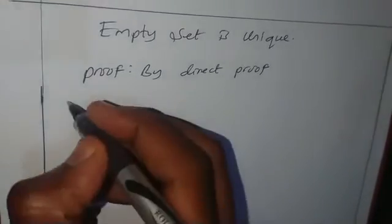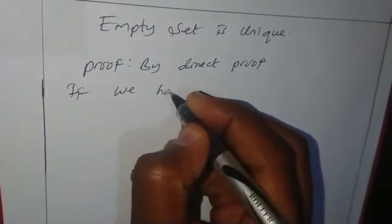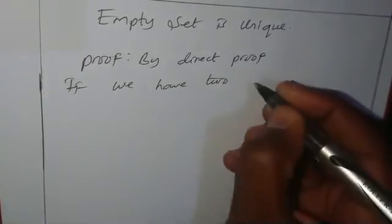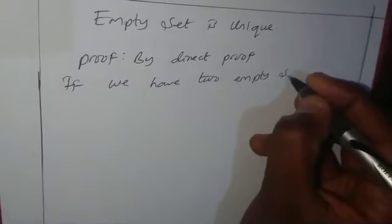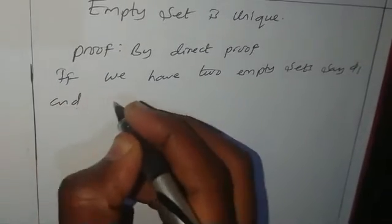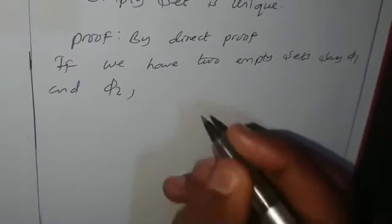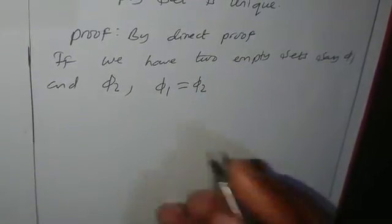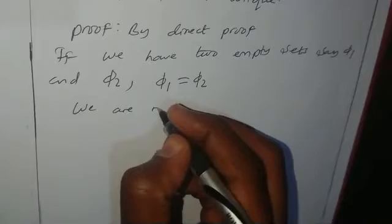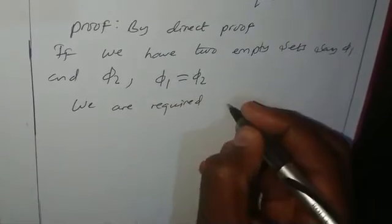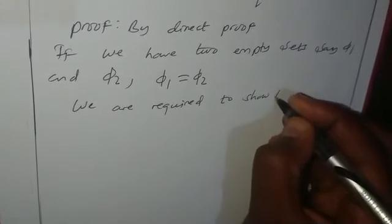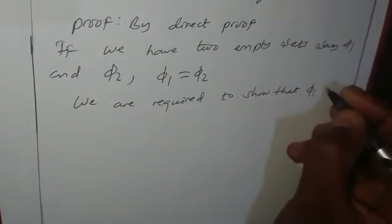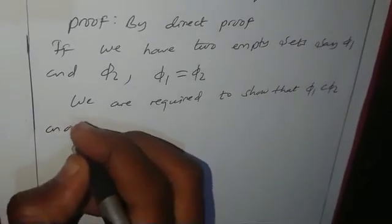By direct proof, we know that from the uniqueness condition, if we have two empty sets — say empty set one and empty set two — the empty set is decided to be unique if and only if empty set one is equal to empty set two. This means we are required to show that empty set one is a subset of empty set two, and conversely,